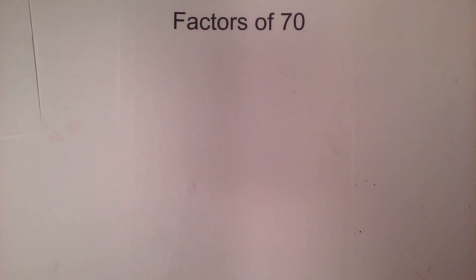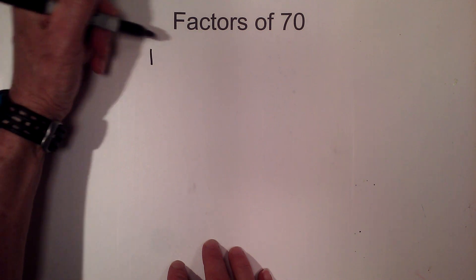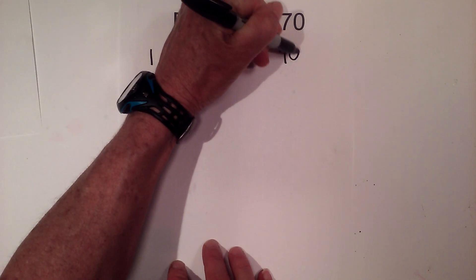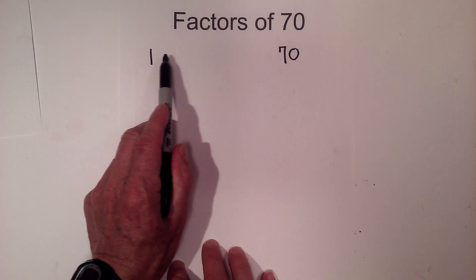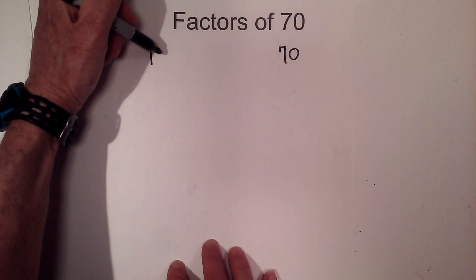Let's find the factors of 70. I like to use this method: I write 1 times 70 equals 70, and then I find all the numbers in between that multiply together to equal 70. So let's begin.